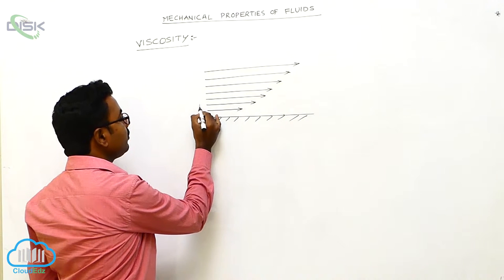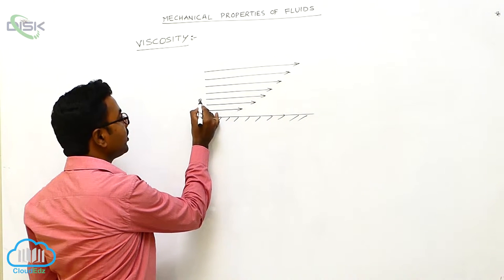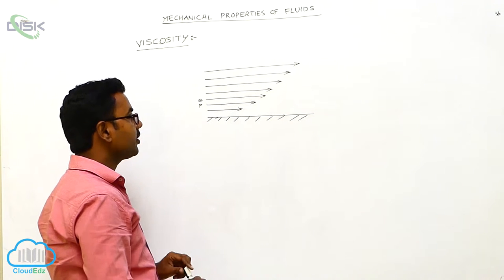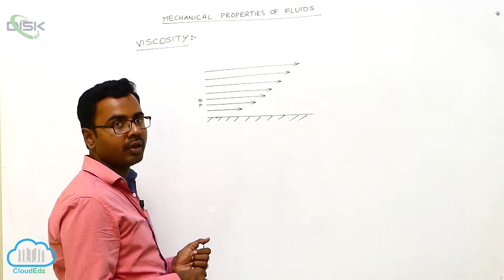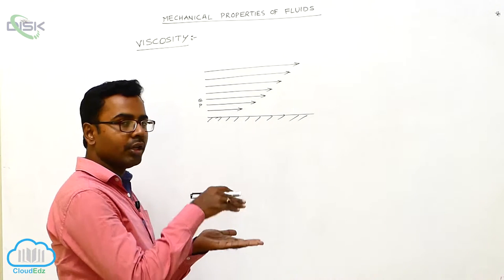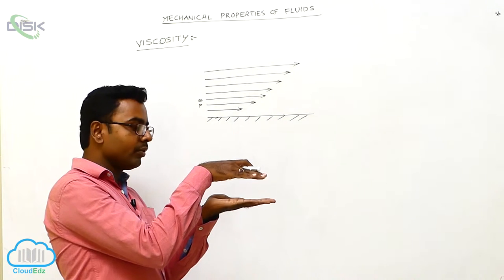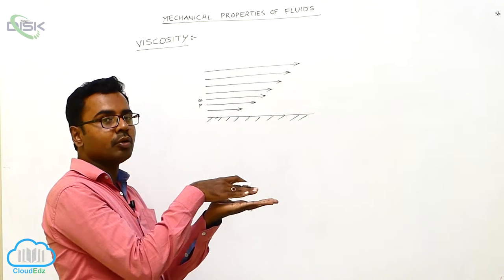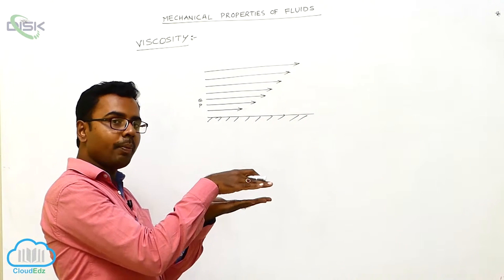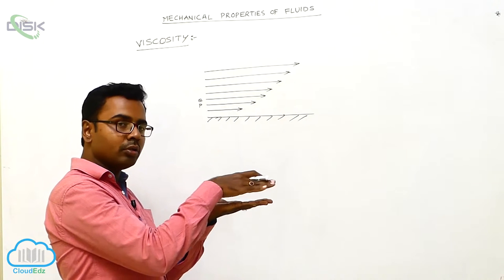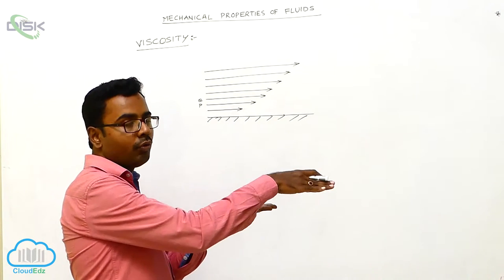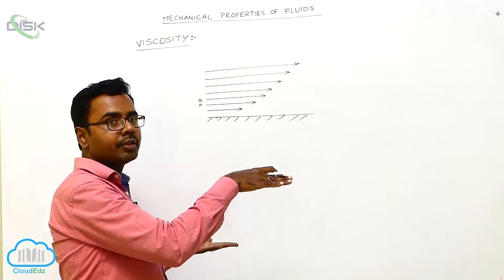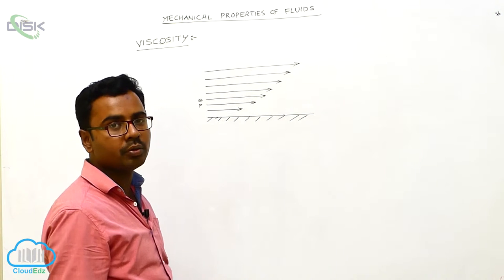If we consider two consecutive layers P and Q, between these two layers there is a cohesive force of attraction between the molecules of the two layers. These cohesive forces oppose the relative motion between them. The upper layer tries to drag the lower layer in the forward direction, and at the same time the lower layer tries to drag the upper layer in the backward direction, opposing their relative motion.